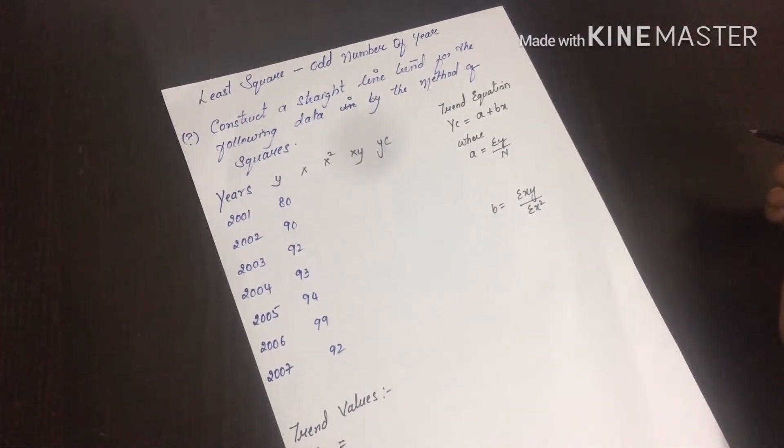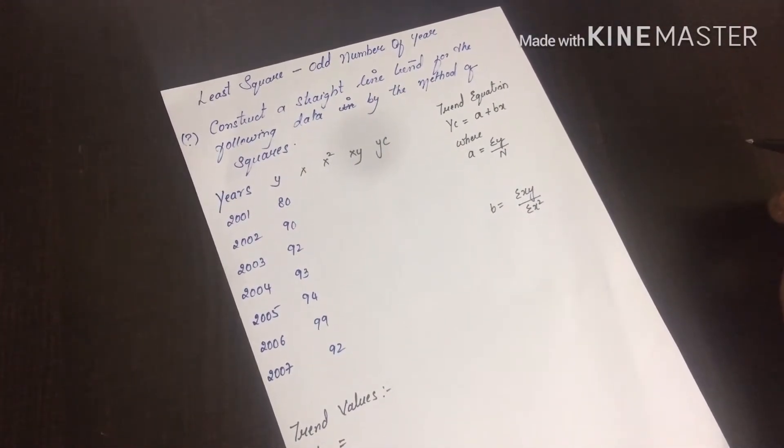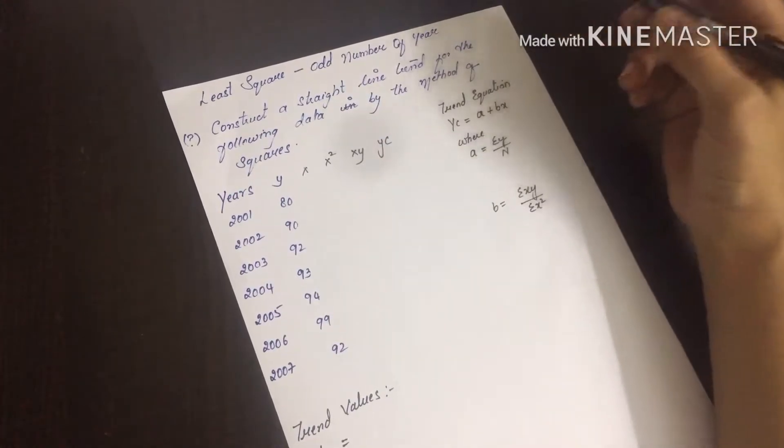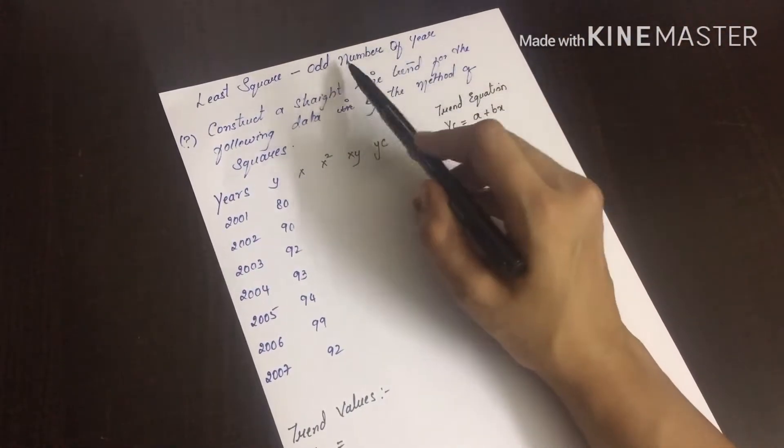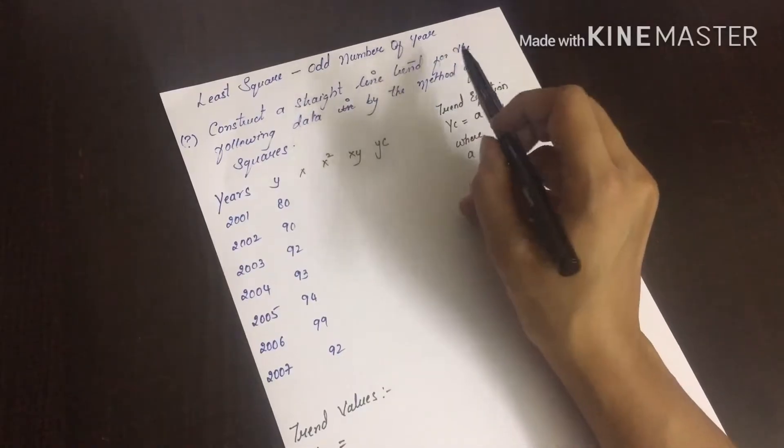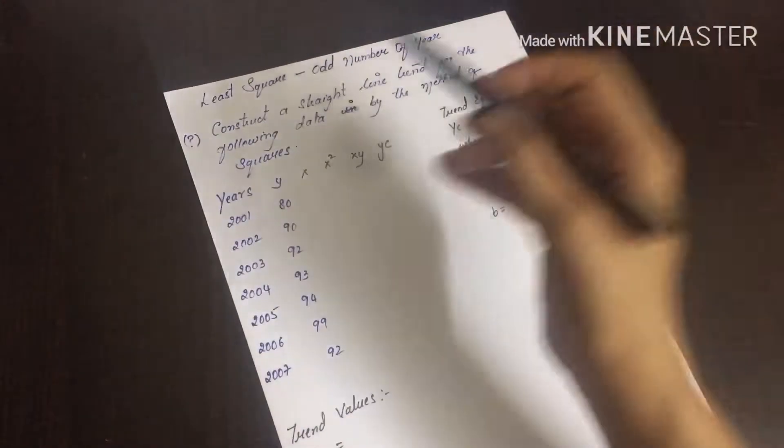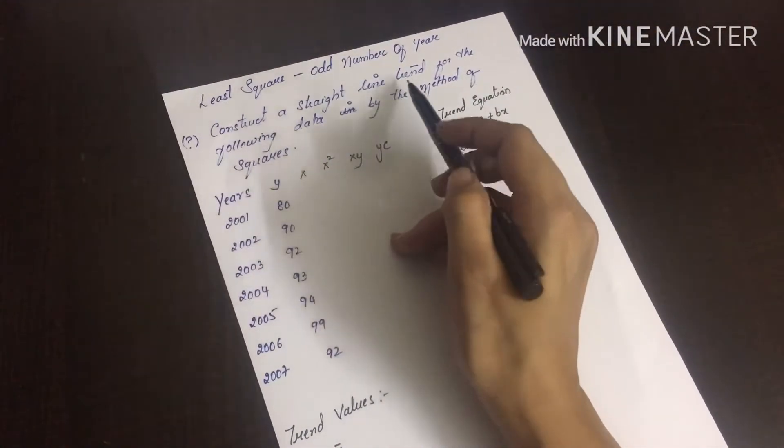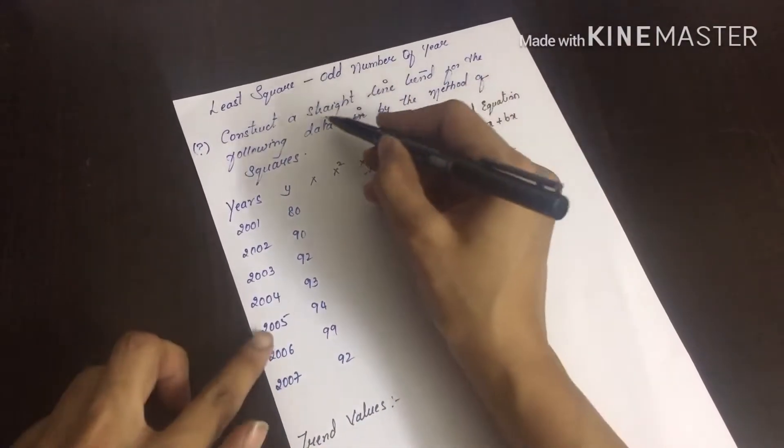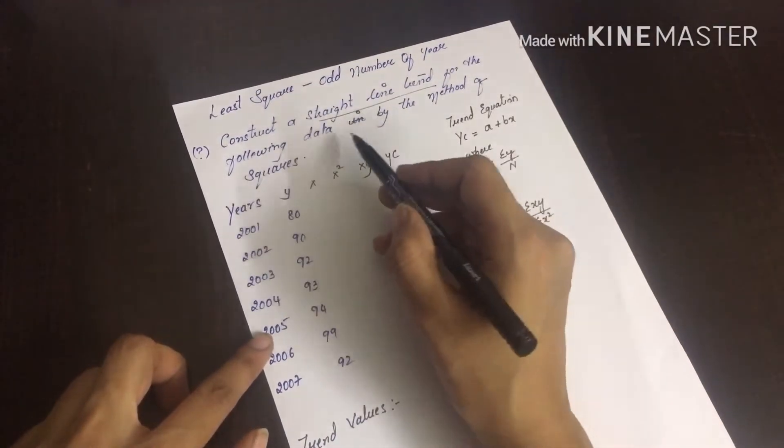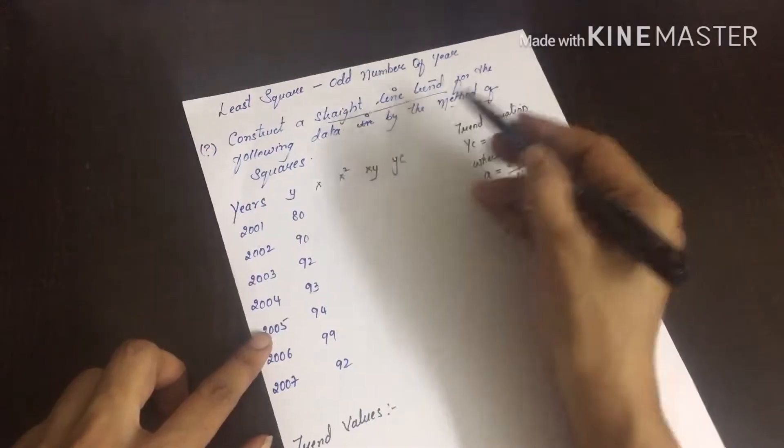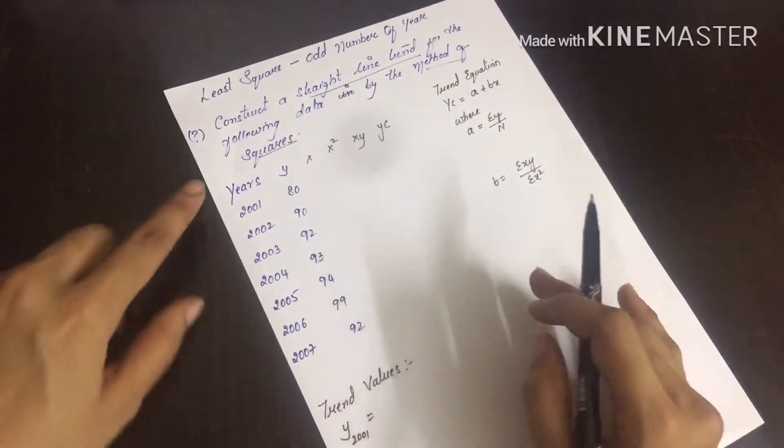A new video on least square method for odd number of years. In this we are going to get two methods: odd number and even number of years. Let us see how to construct a straight line trend. We need to construct a straight line trend for the following data by the method of least squares. The question is given with year and values.